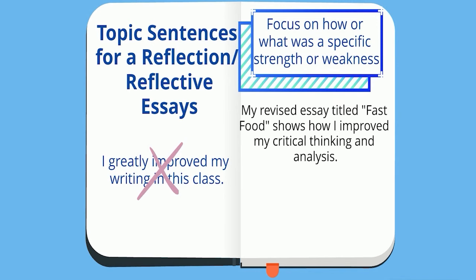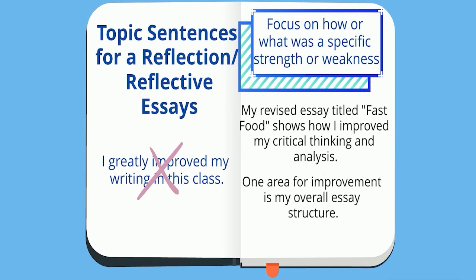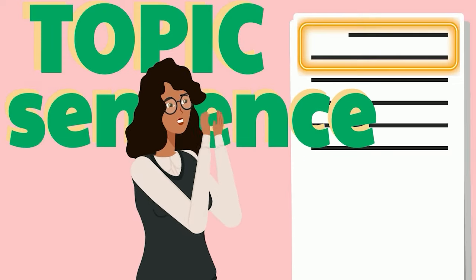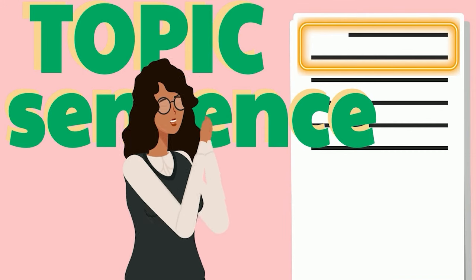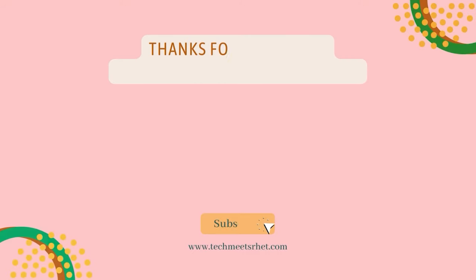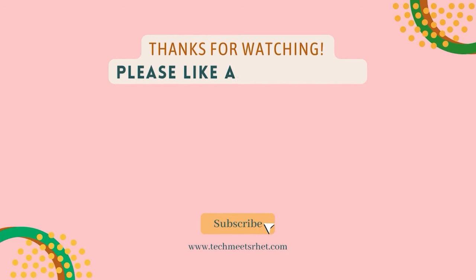For instance: 'My revised second essay titled Fast Food is a great example of how I improved my critical thinking and analysis.' Or if you're focusing on a weakness, you can state: 'One area for improvement is my overall essay structure.' I hope this video helps you to write clear topic sentences that give your audiences just the right amount of information. Please like and subscribe for more content.